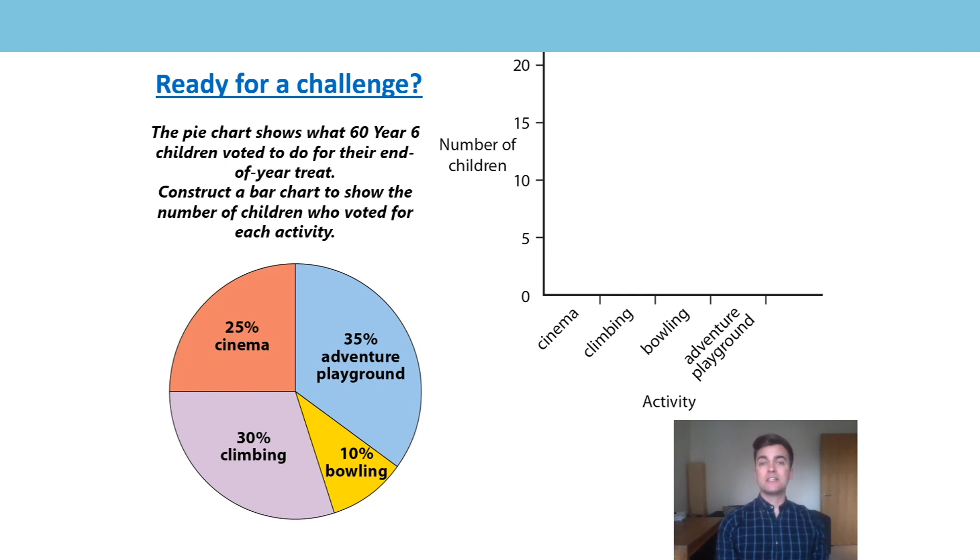Each part representing an end-of-year treat and the proportion of the whole that voted for that treat. Let's start then, transferring cinema, 25% of the whole voted for the cinema, 25% of 60. Now, again, as with the previous questions, there are different options for finding that amount, 25% is a quarter, a quarter of 60 is 15. 30% have gone for the climbing option. 30%, well, if I know 10%, divide by 10, 6. 30%, 3 lots of 6, 18.